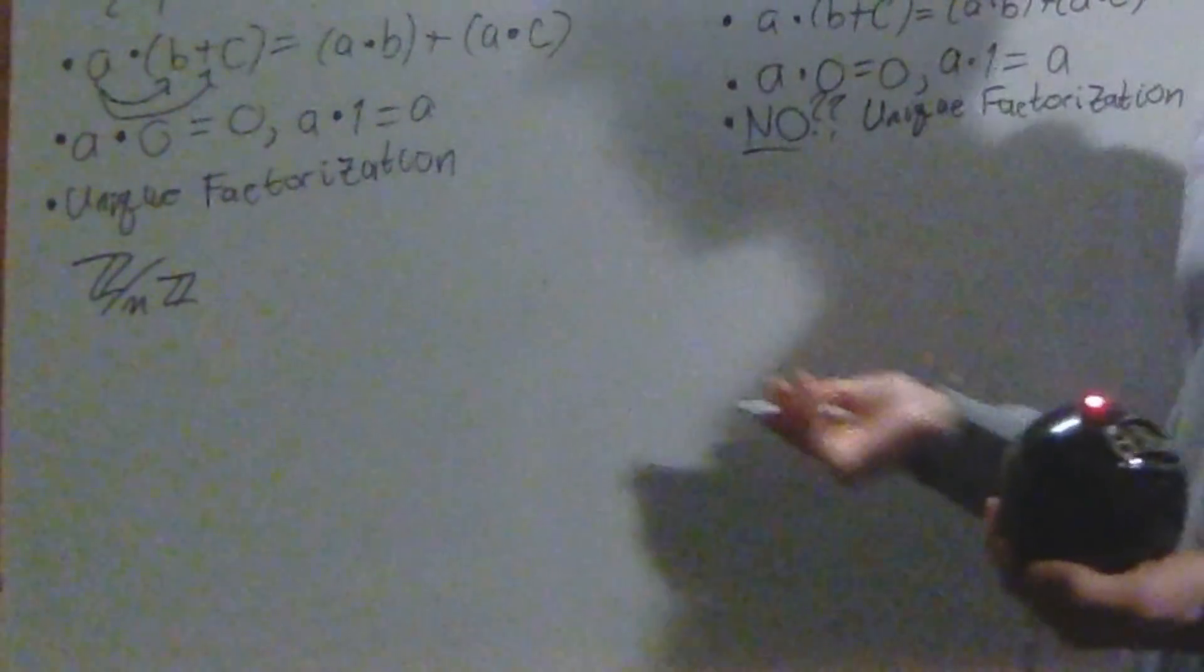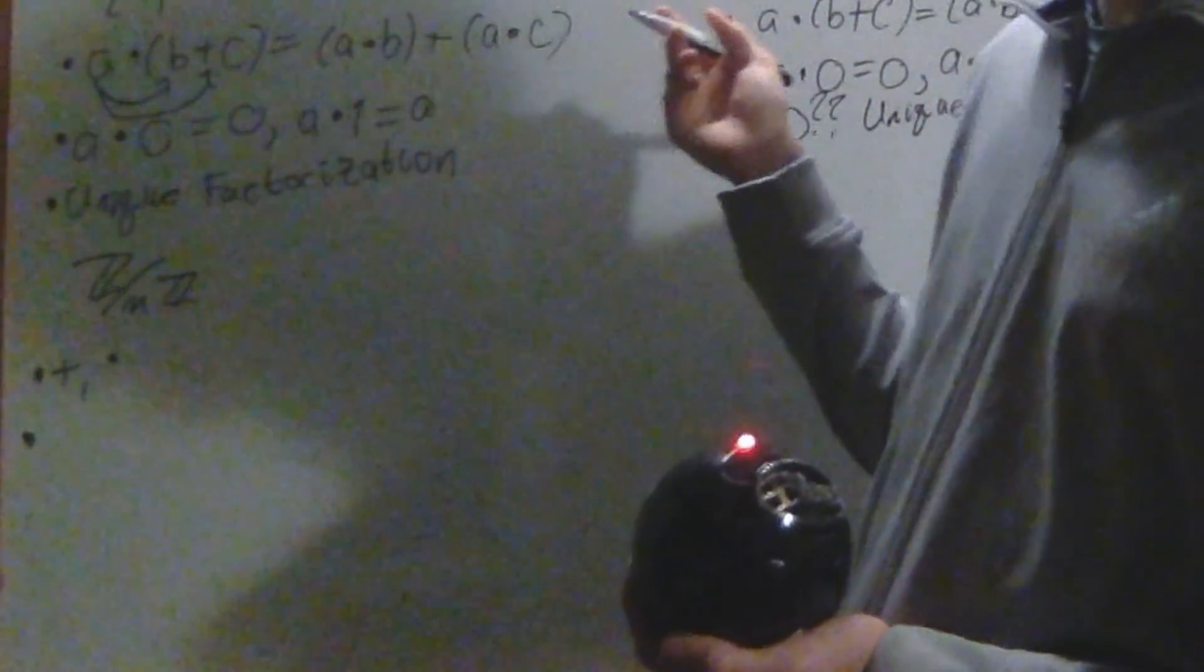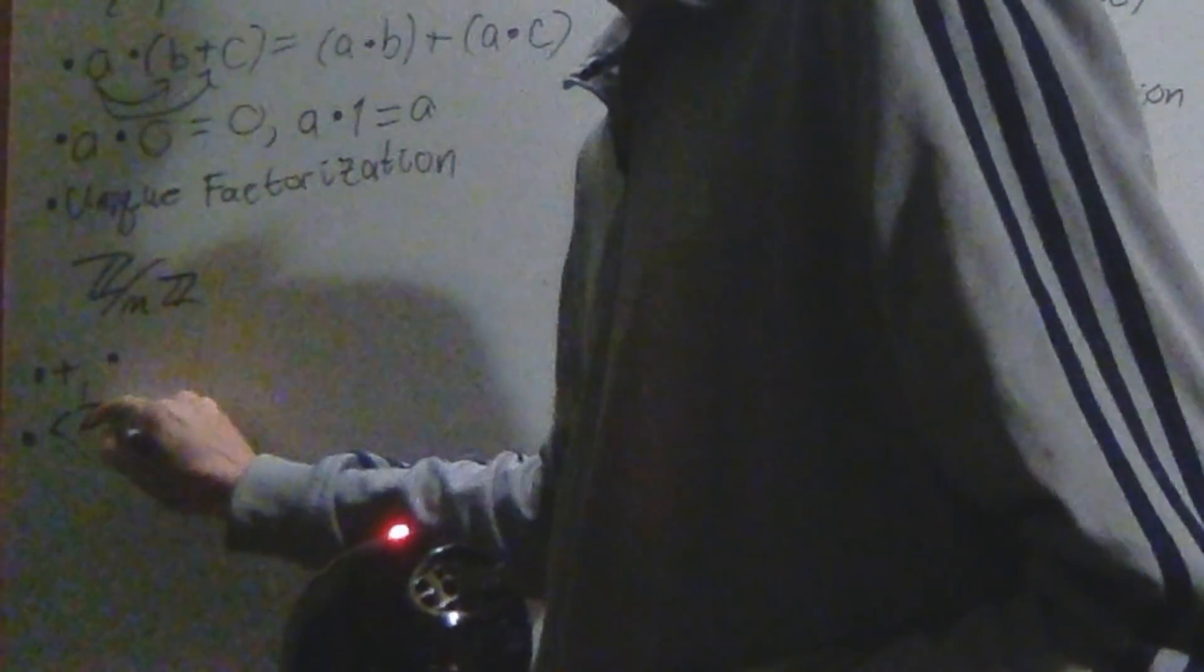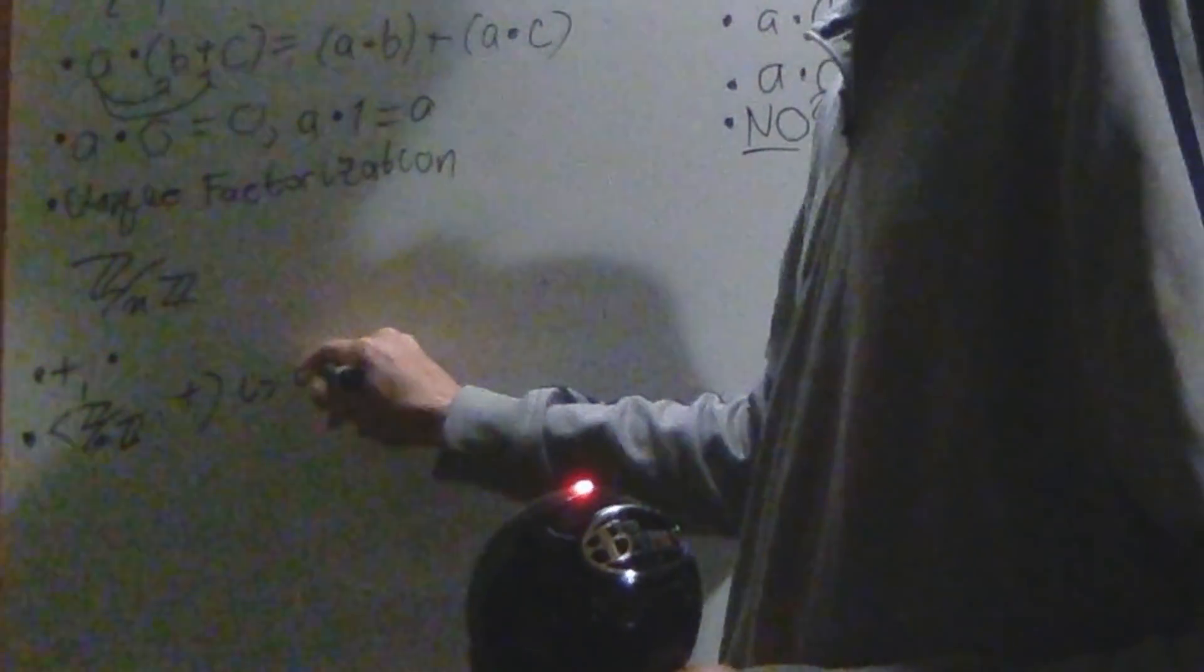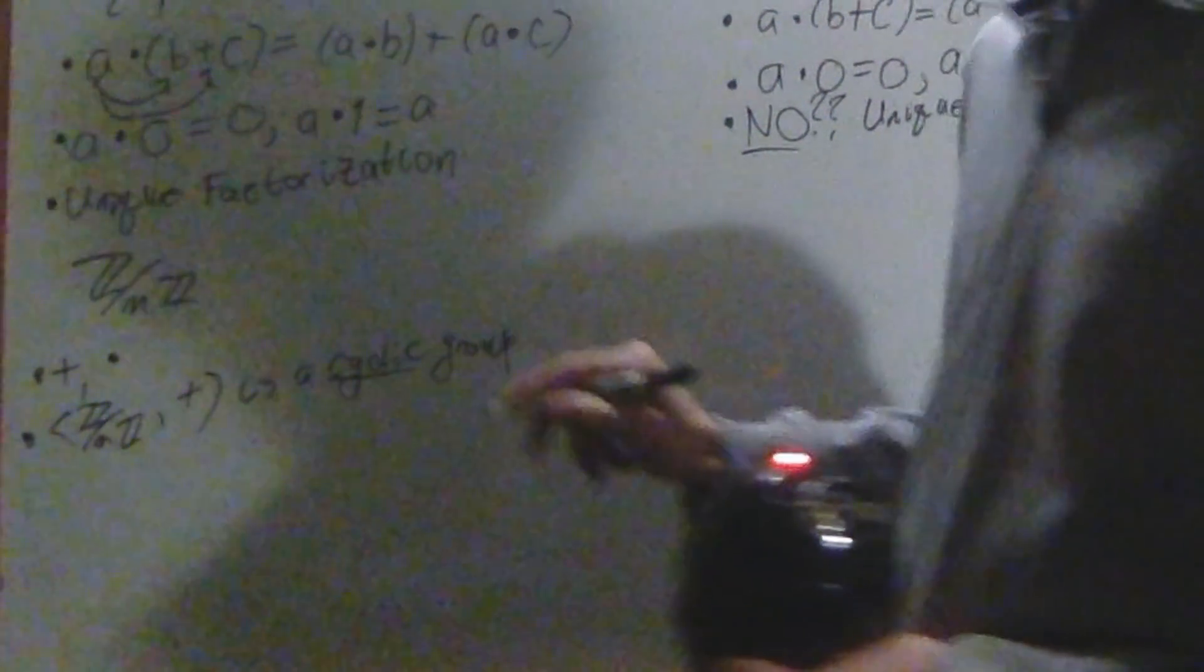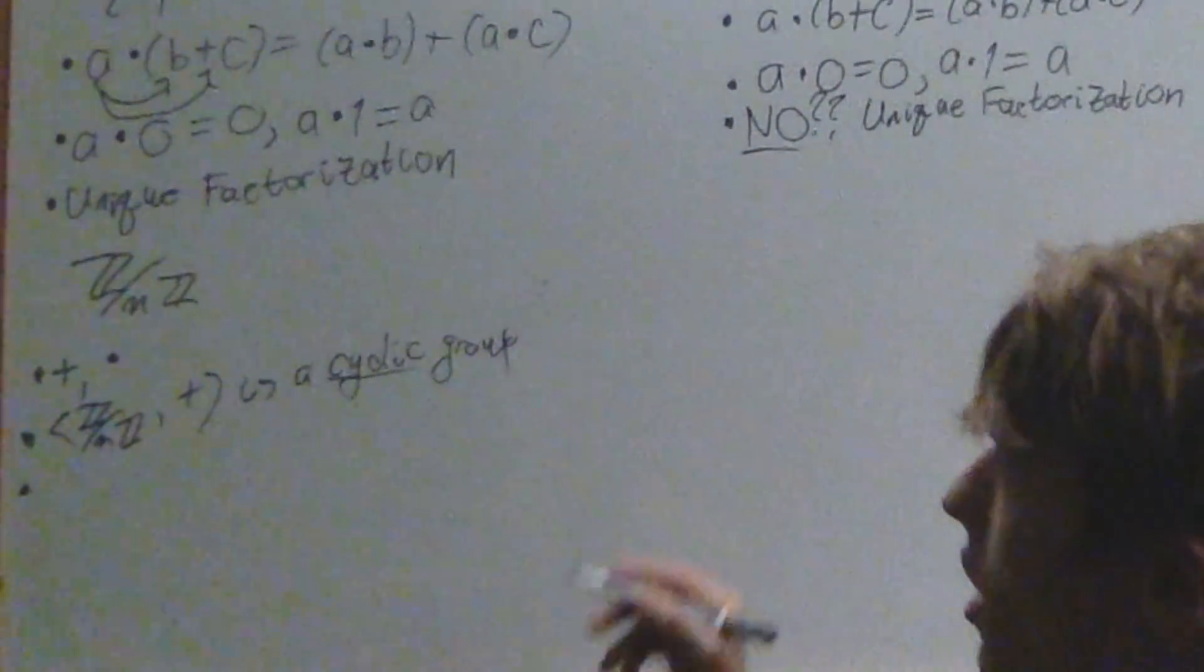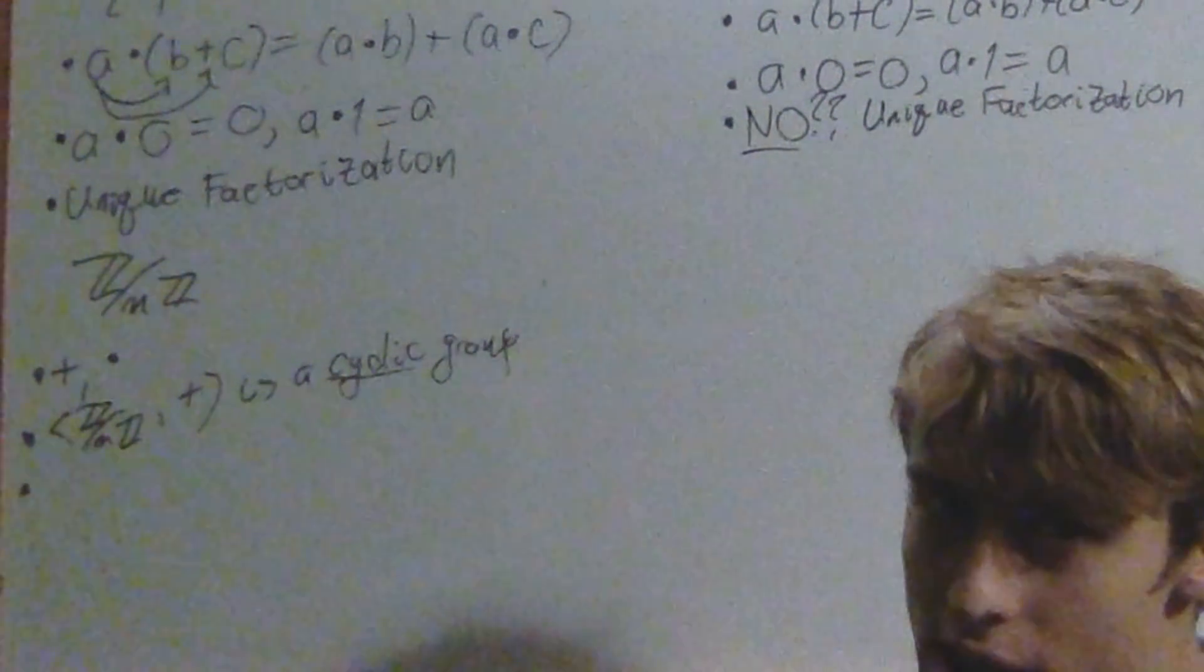Another thing we can do is Z mod nZ. This is another example of something with two operations. Let's just go through it again. It has plus and multiply. And then Z mod nZ under addition is, in fact, an abelian group. It's a cyclic group, actually. And then the next thing, which is under multiplication.